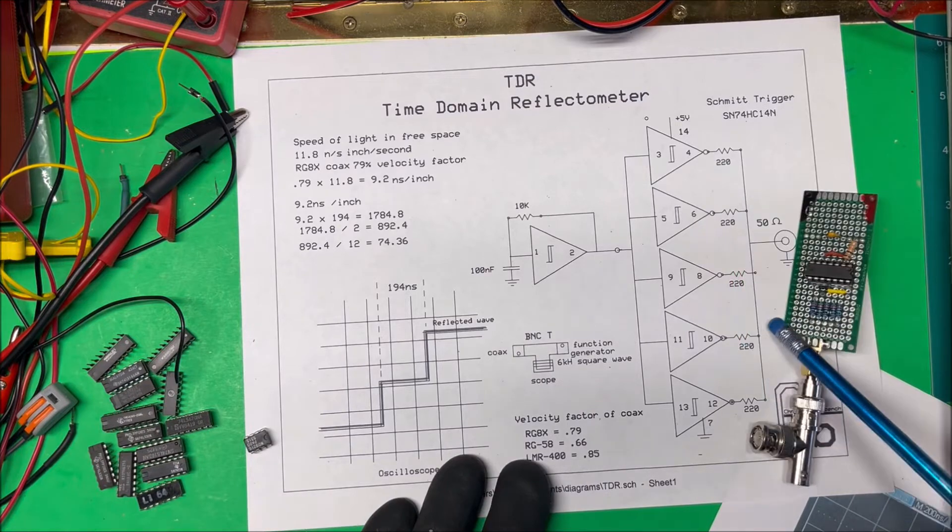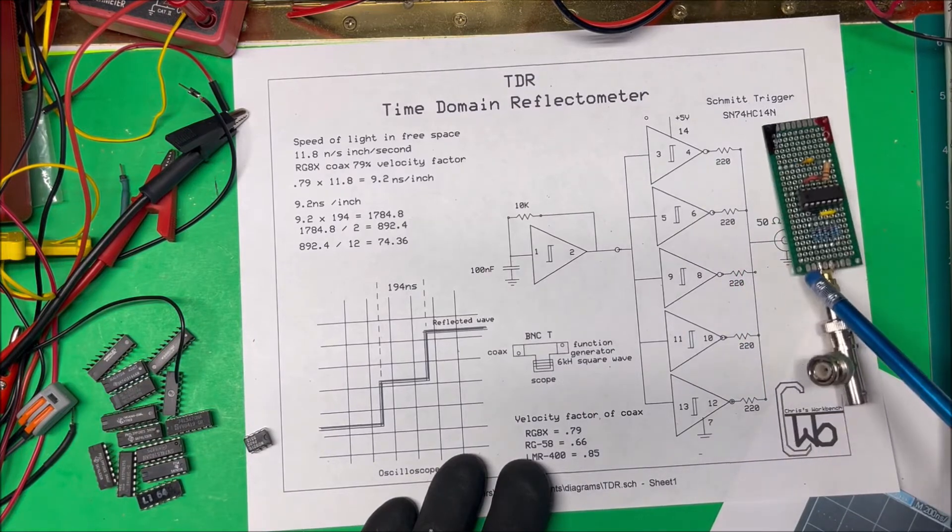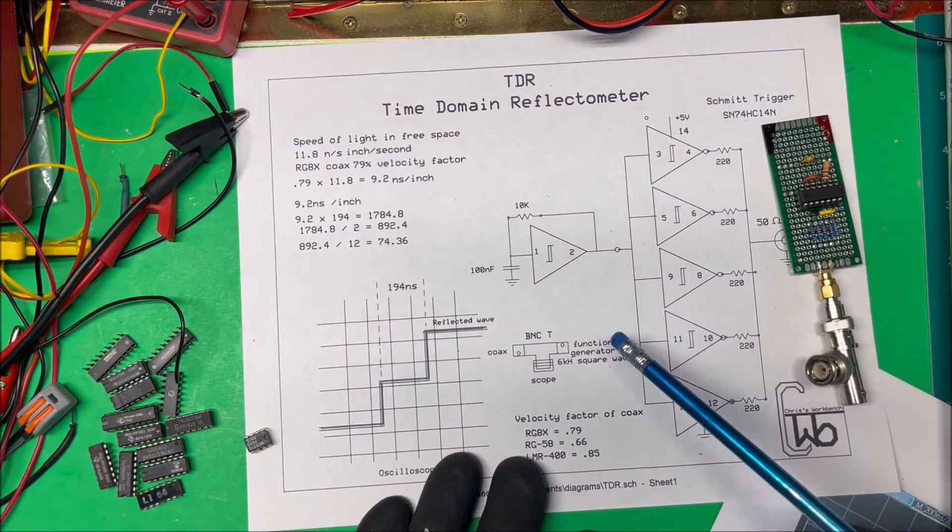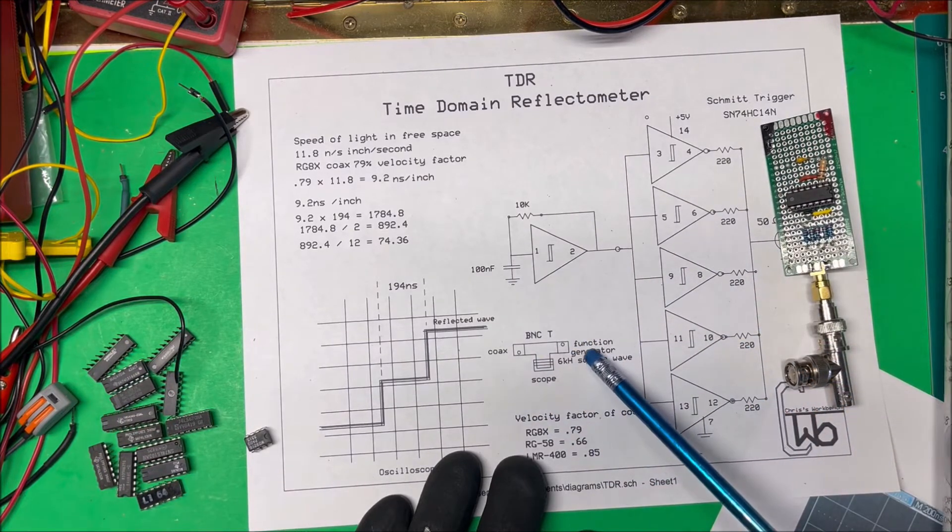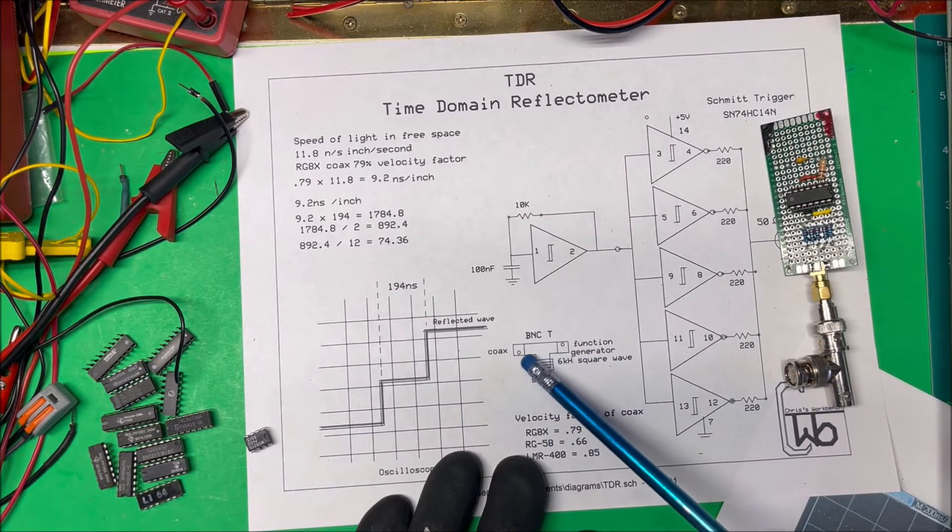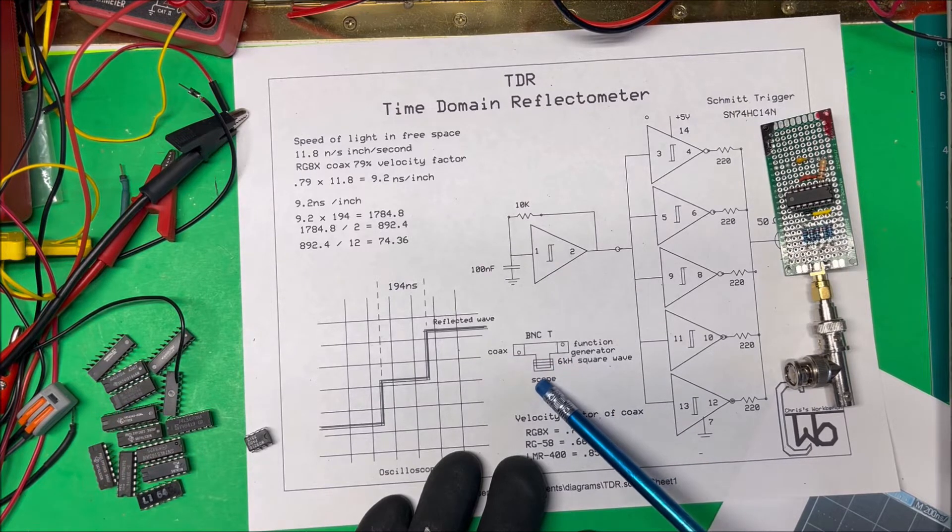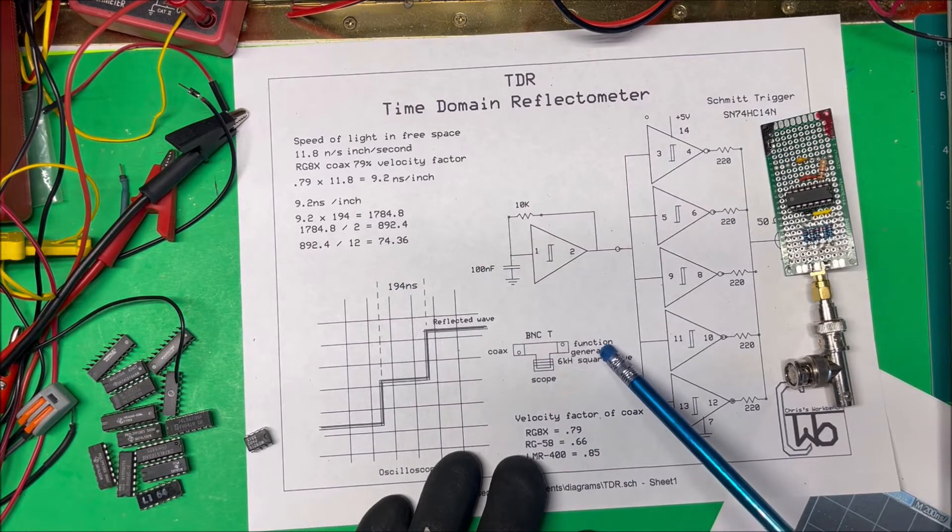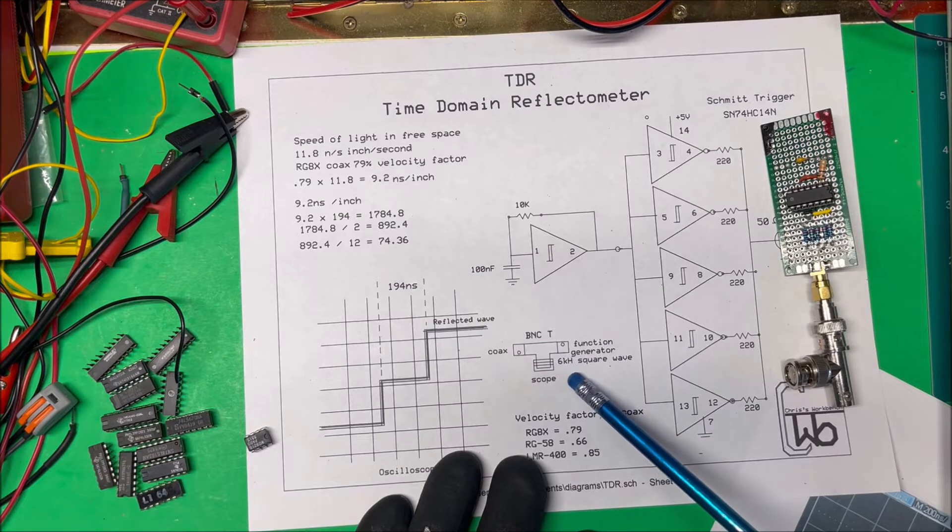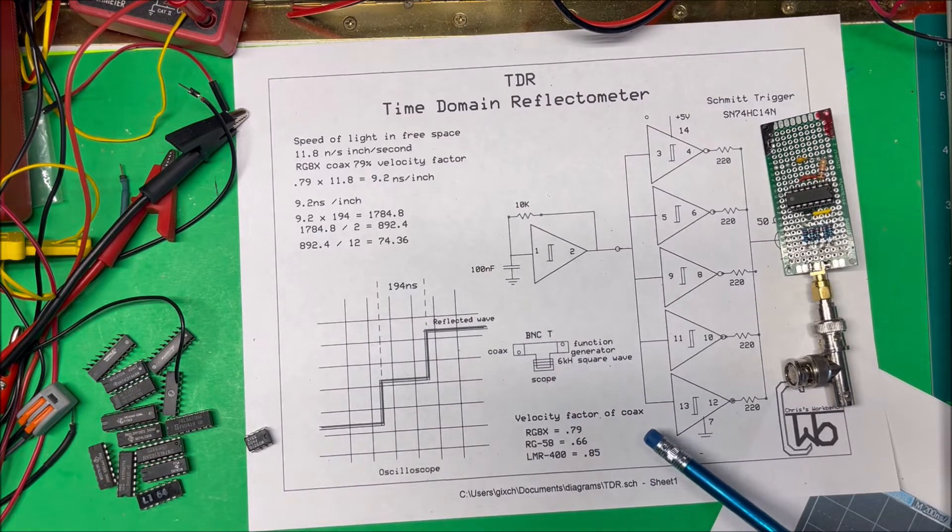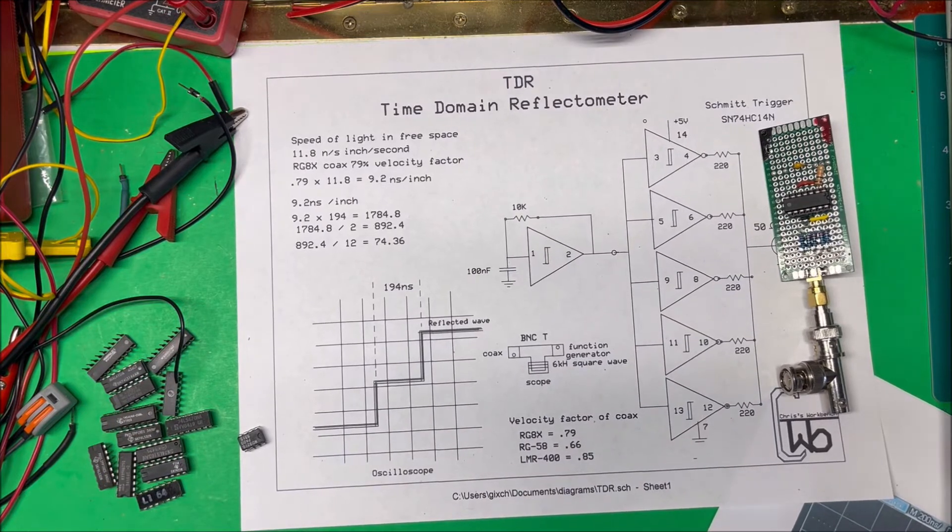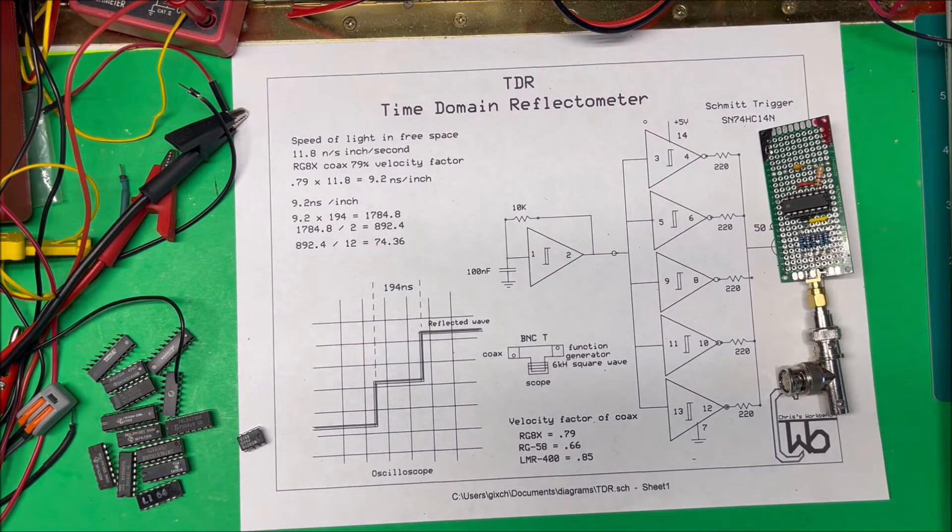Now I use this little unit here, it works good, but if you don't want to build this up you can just use a function generator. So this T connector here, one side goes to scope, one side will go to your function generator and you put in a six kilohertz square wave and the other side goes to your coax. And that works fine.